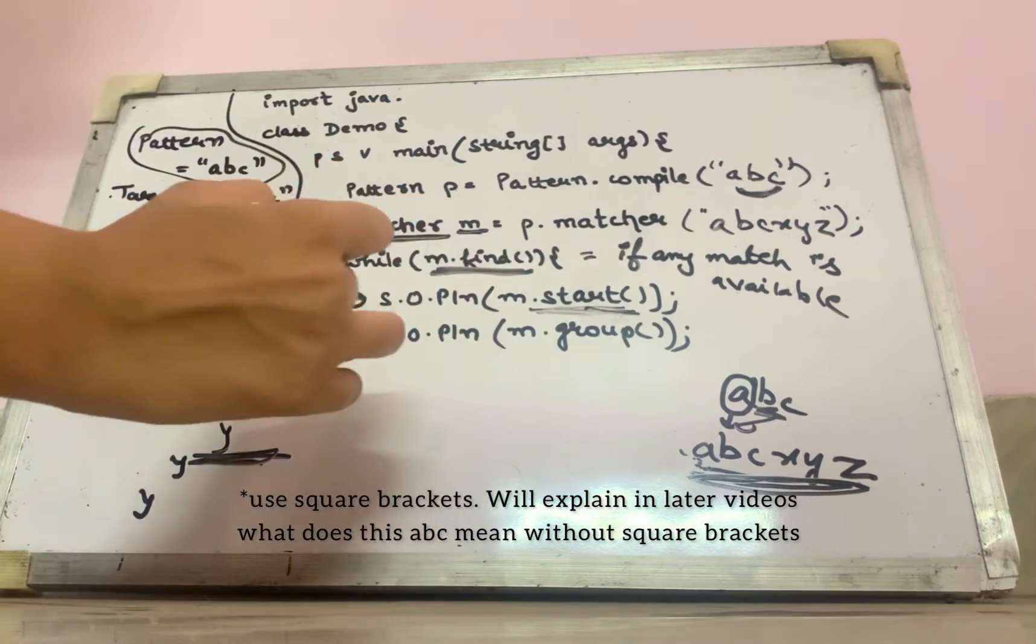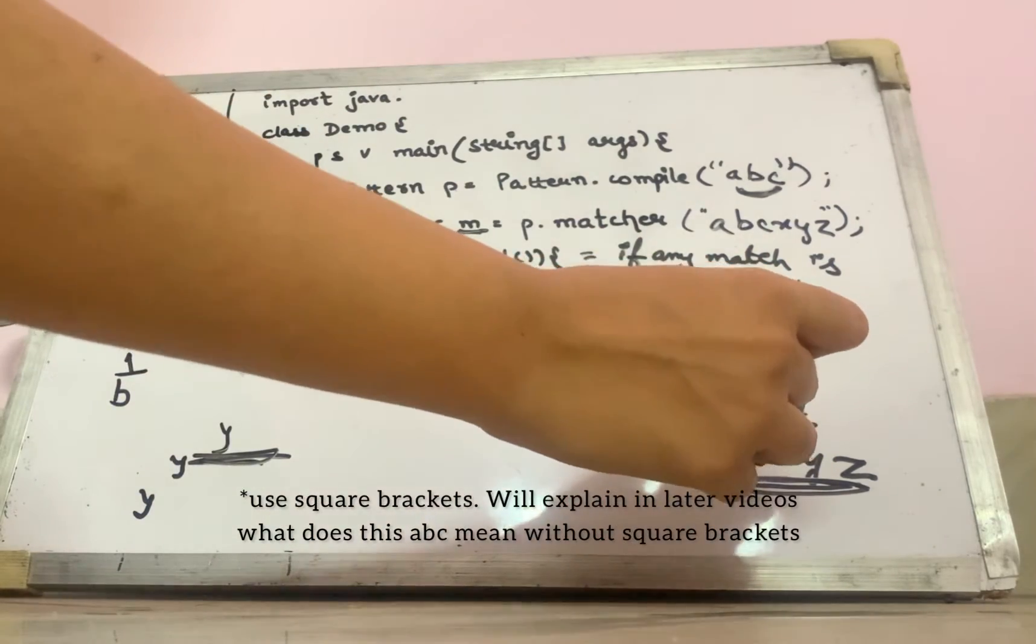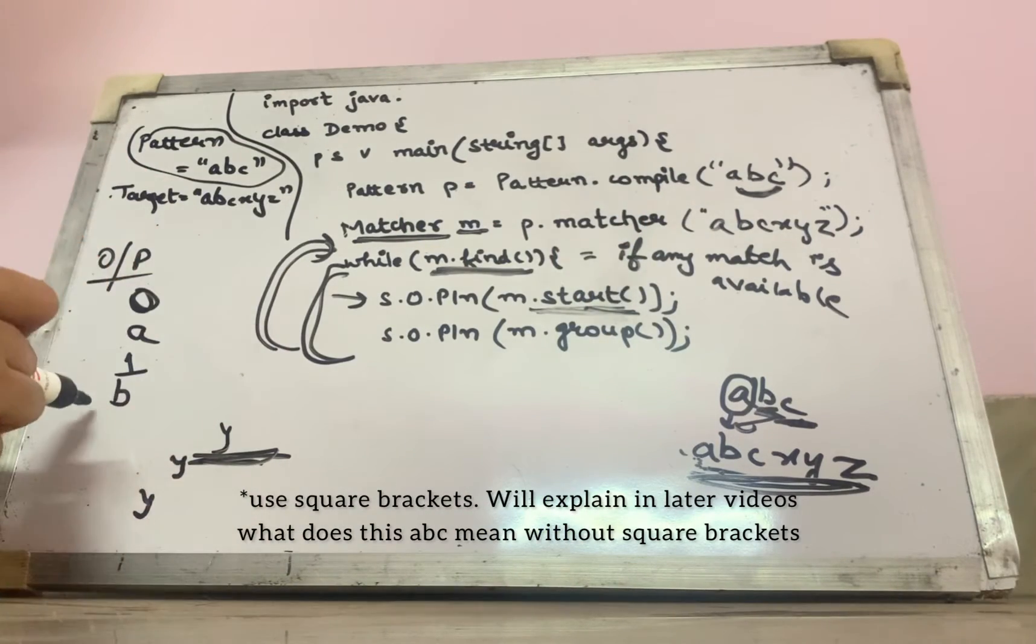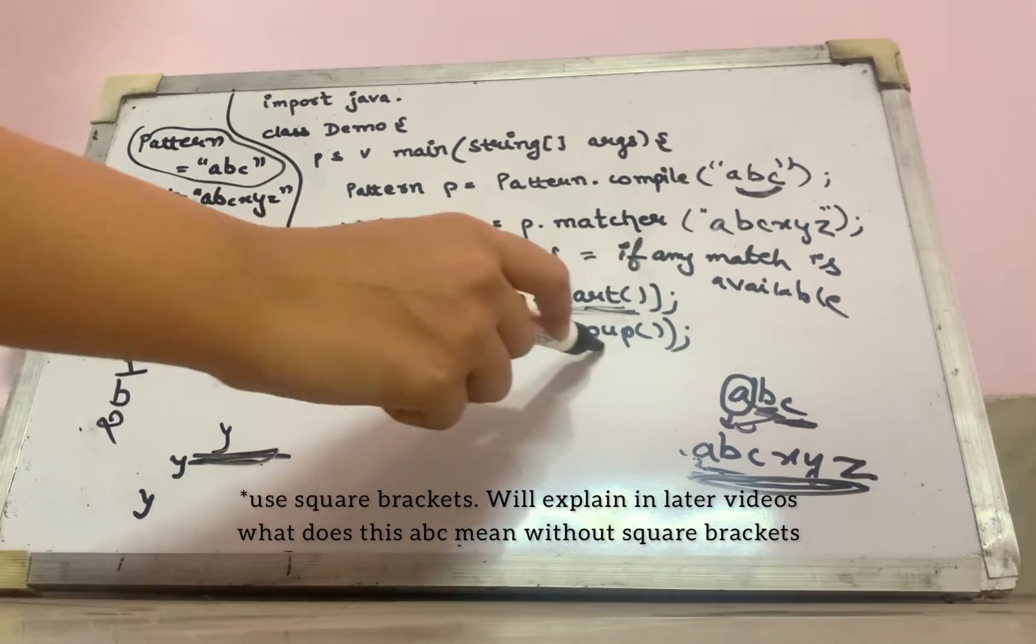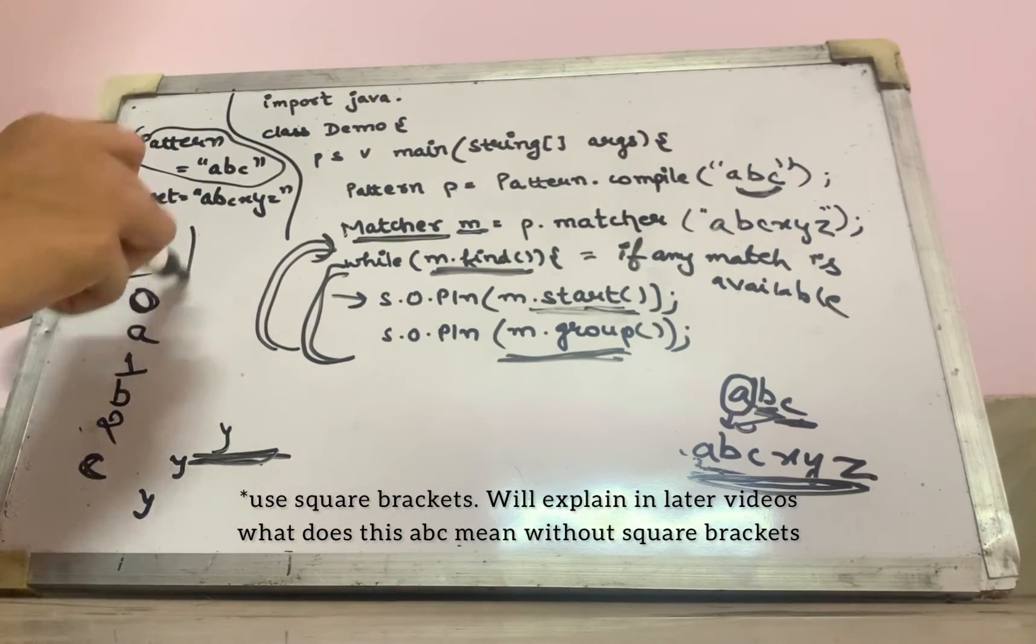Now, again, the loop goes on till the end. Now, it will take c. Does match found? Yes. At which index? 2. What match is found? C. This will be the output.